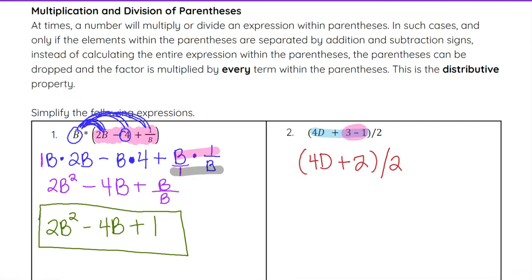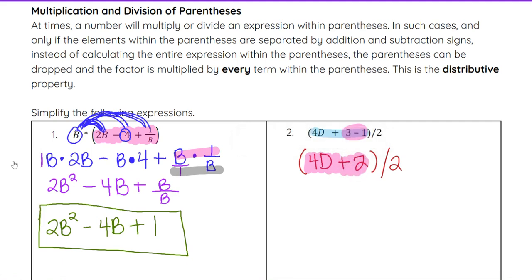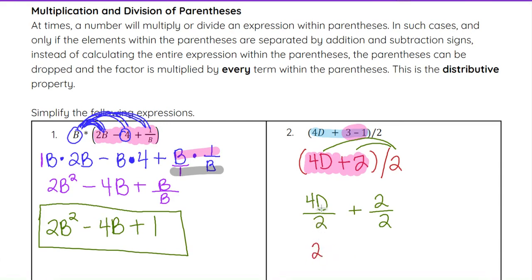Now we can't simplify any more in the parentheses. This is where the same distribution concept applies, except we are dividing by 2 rather than multiplying. We distribute that divided by 2 to each term, so it becomes 4d divided by 2 plus 2 divided by 2. Four divided by 2 gives 2, and we still have d, so that's 2d. Plus 2 divided by 2 is 1. So the answer is 2d plus 1.